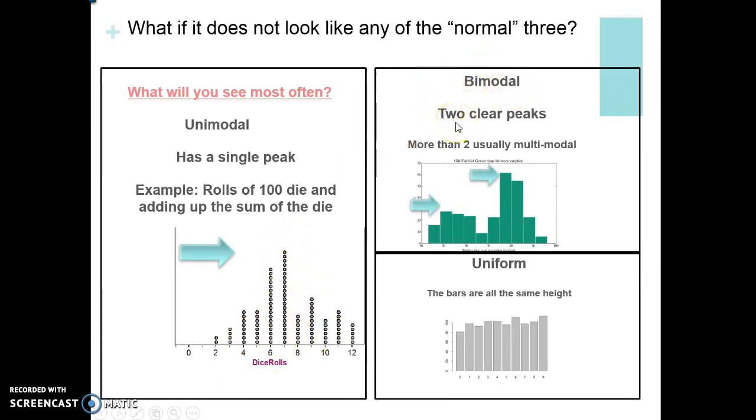Bimodal just means there's two clear peaks. Trimodal would be three clear peaks. If there's more than two we usually call it multimodal. This graph takes a look at the old faithful geyser in Yellowstone and the time between its eruptions. In this case we have a peak right here and then a peak up here. This is not symmetric because if I fold this in half it's not going to be the same on both sides.